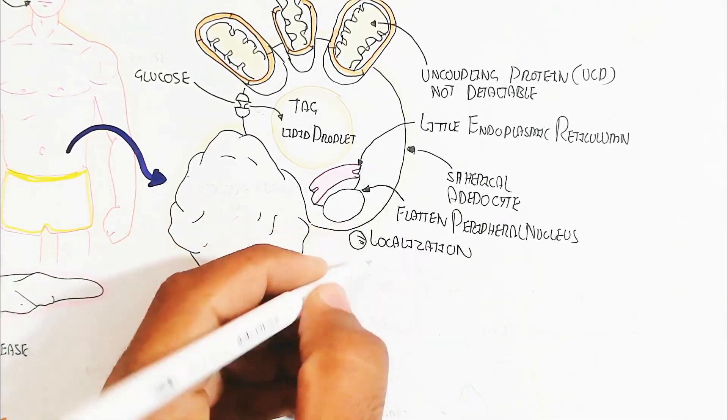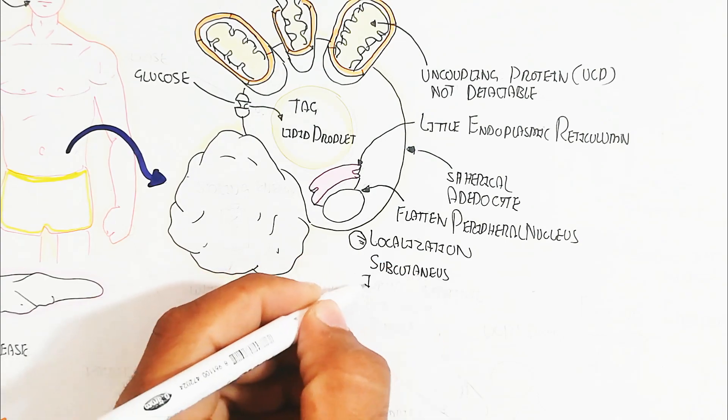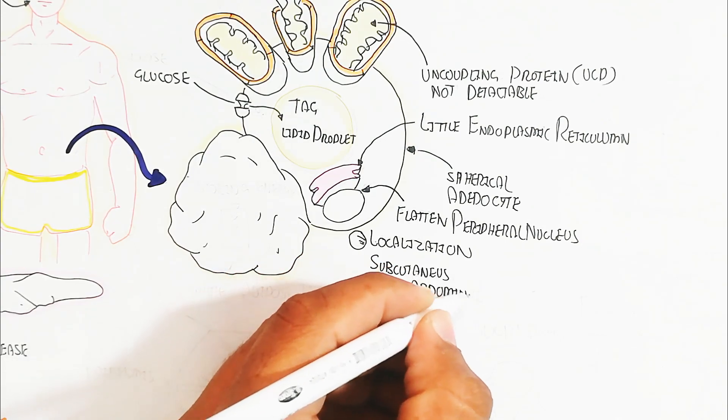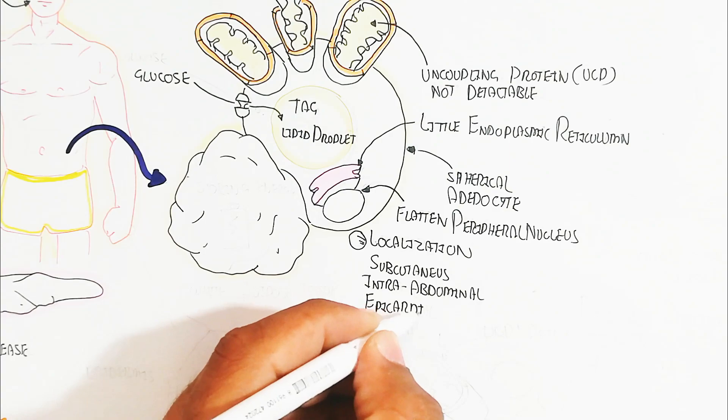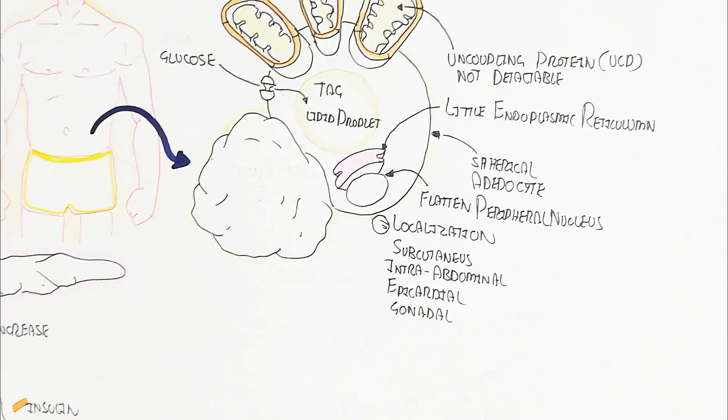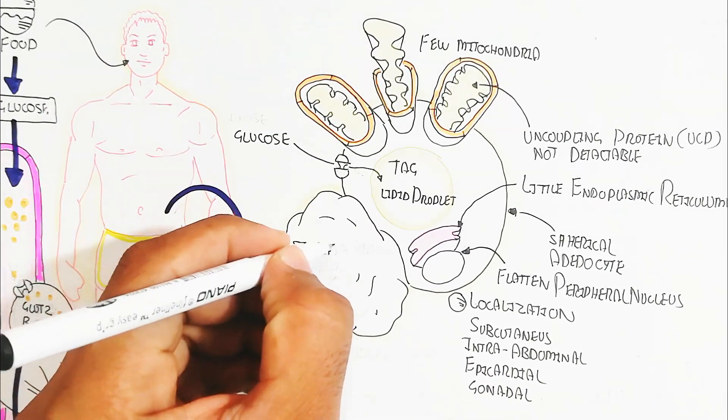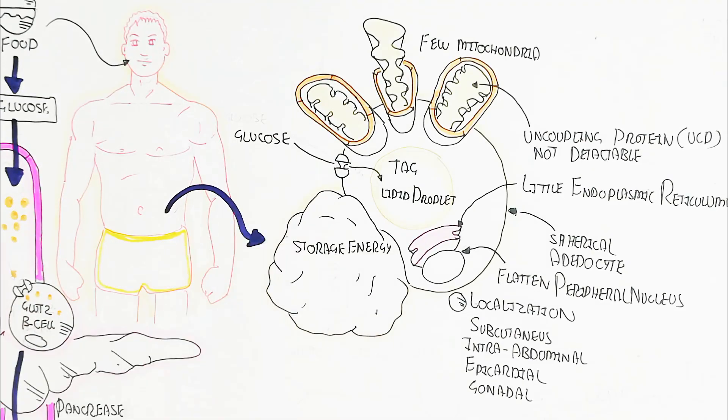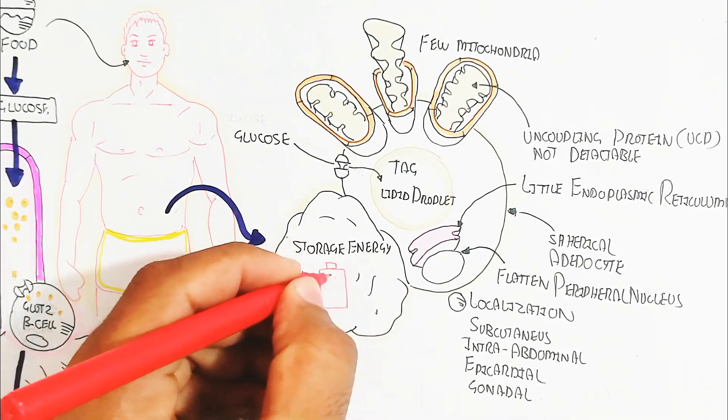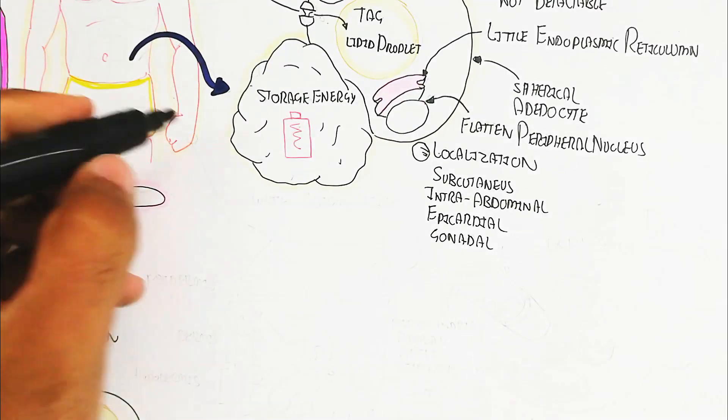Epicardial means the cover of the heart, and the gonadal as well as renal. The storage of energy is important for this white adipose tissue. It plays an important role for the storage of energy.